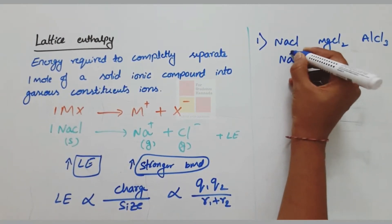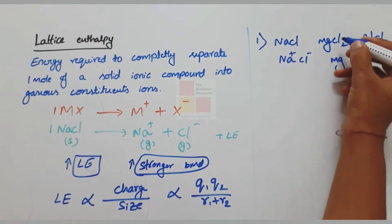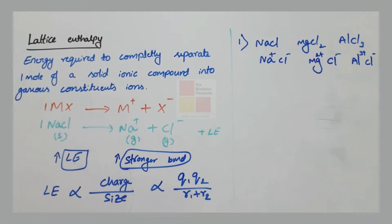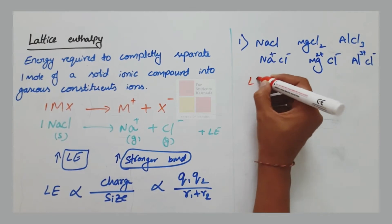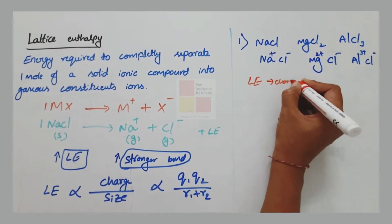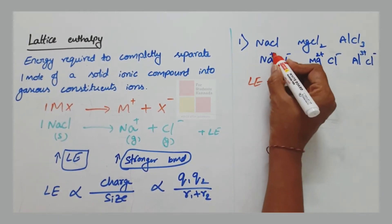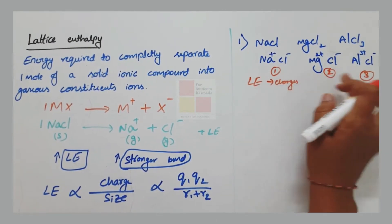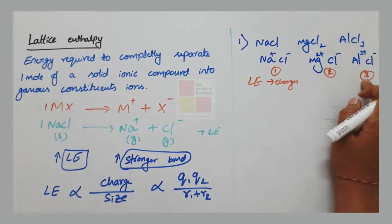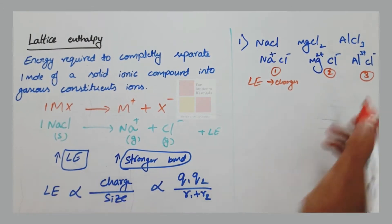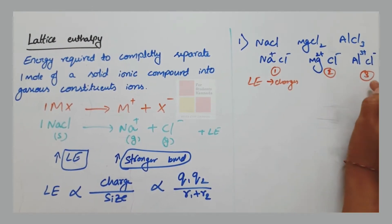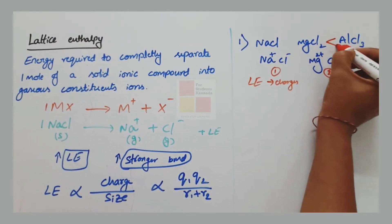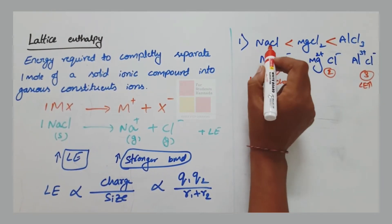Consider Na⁺Cl⁻, Mg²⁺Cl⁻, and Al³⁺Cl⁻. When we look at charge first: for NaCl, Q1×Q2 = 1×1 = 1; for MgCl2, it is 2×1 = 2; and for AlCl3, it is 3×1 = 3. Since charge is directly proportional to lattice enthalpy, AlCl3 has the highest lattice enthalpy, followed by MgCl2, and NaCl has the lowest — meaning NaCl has the weakest bond among the three.